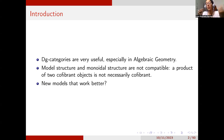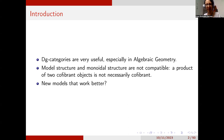An example of that is that the product of two cofibrant objects is not necessarily cofibrant. In order to solve this problem, people over the years have been trying to find other models — other definitions of DG categories that might work better and solve some of these issues. And in order to do that, in the last decade to 15 years, one of the ways they have done that has been taking inspiration from infinity categories.